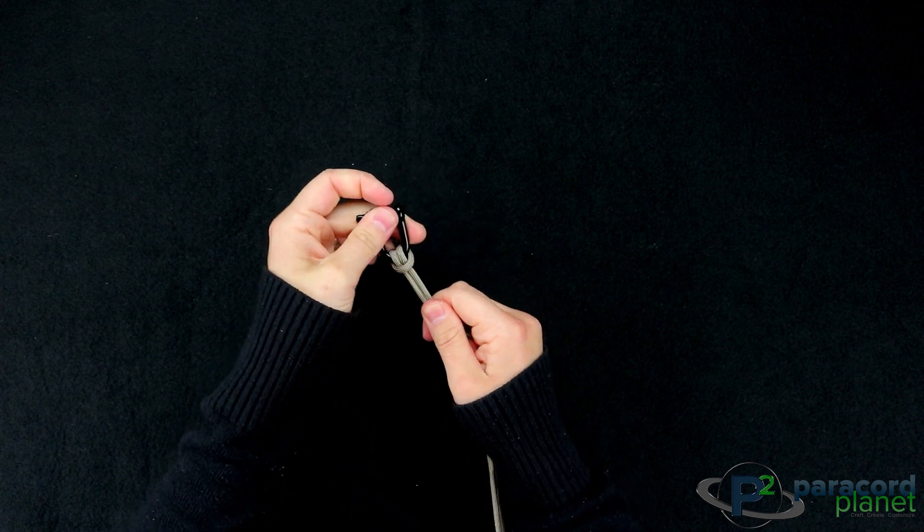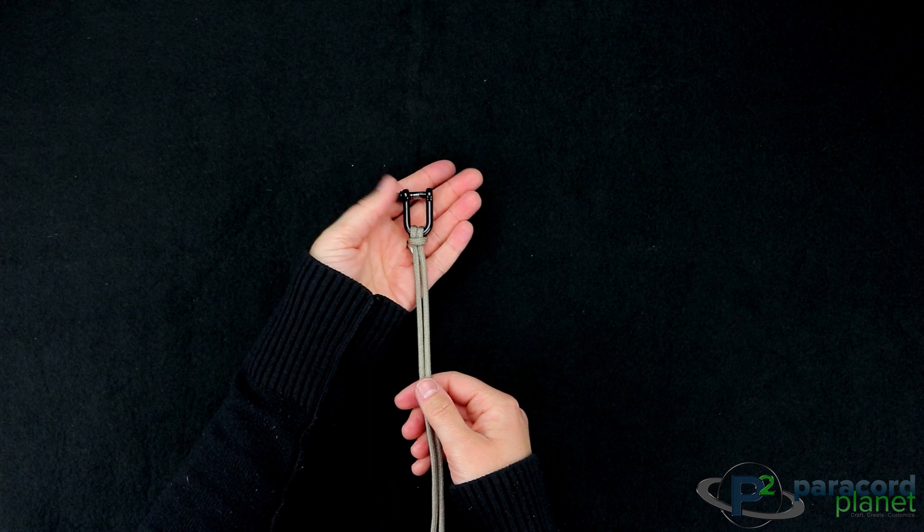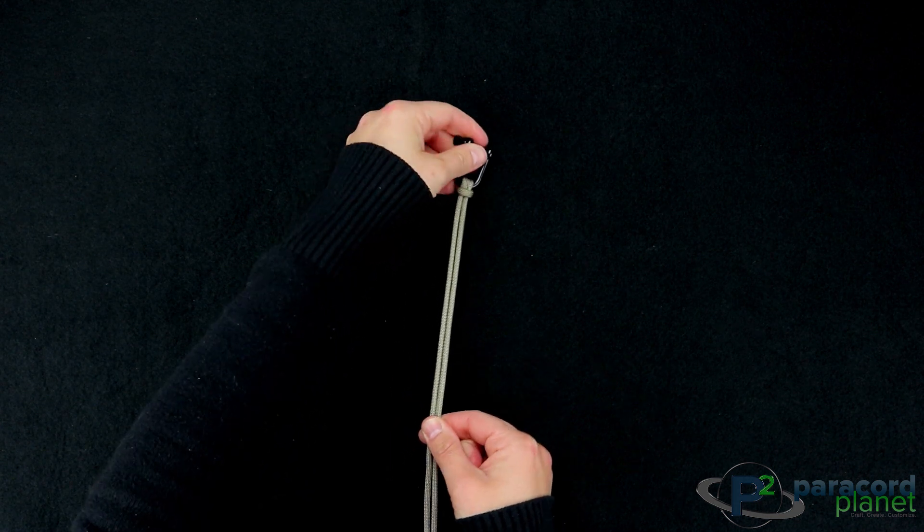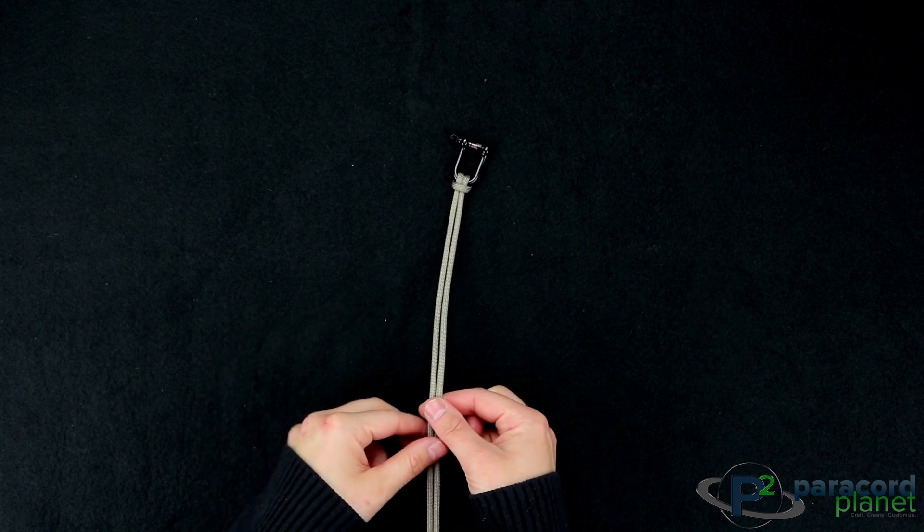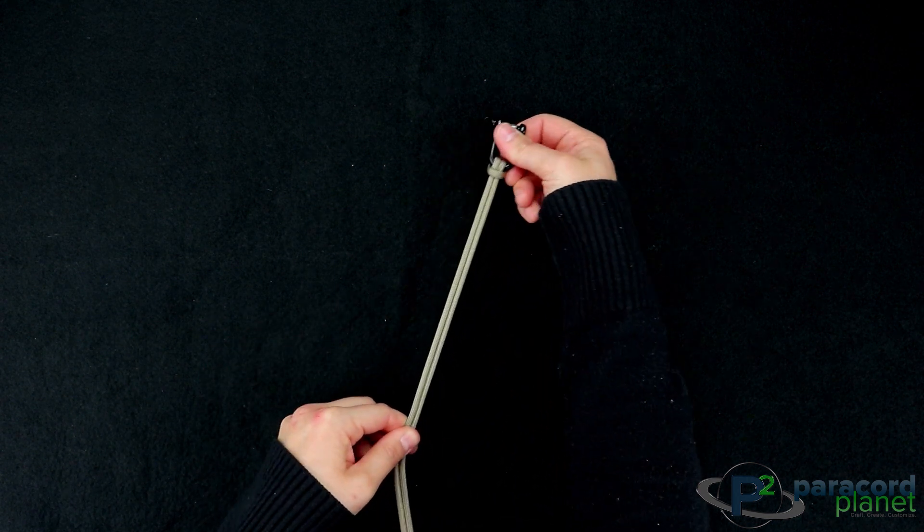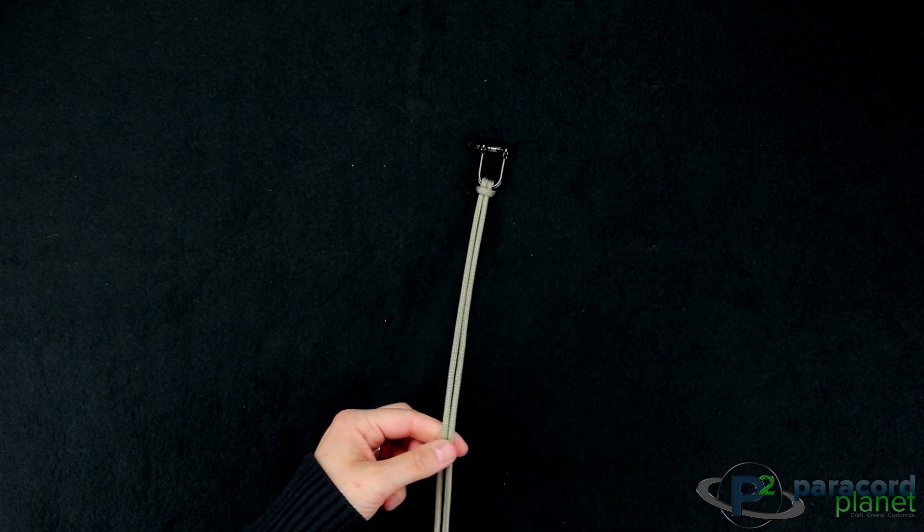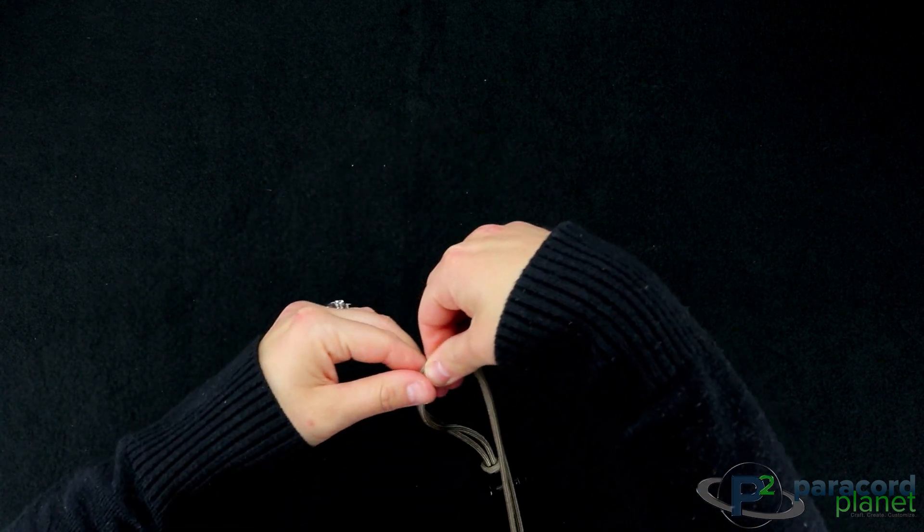Once you have your cow's hitch, you will want to measure how long you want your bracelet. You can either do that against your wrist or with a ruler. I want mine to be about 8 inches. I'm just gonna eyeball mine here for the purpose of this tutorial.